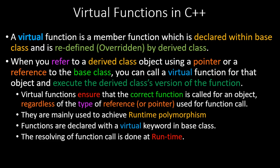If you've seen the function overriding tutorial, you might wonder: what's the difference between a normal overridden function and a virtual function? Function overriding can happen without virtual functions too. The key is: when you refer to a derived class object using a pointer or reference to the base class, you can call a virtual function and execute the derived class version of that function.